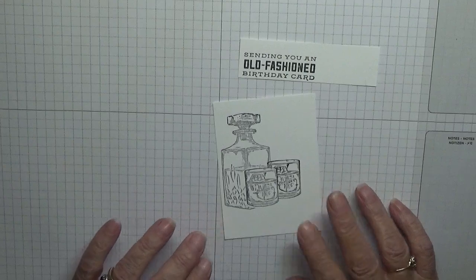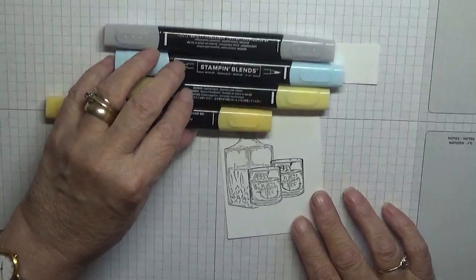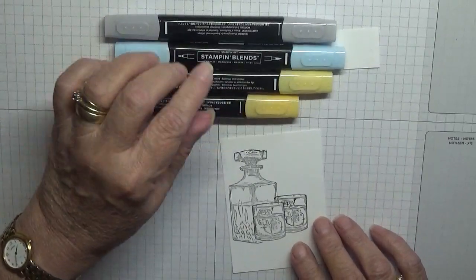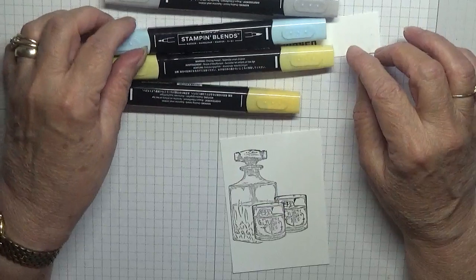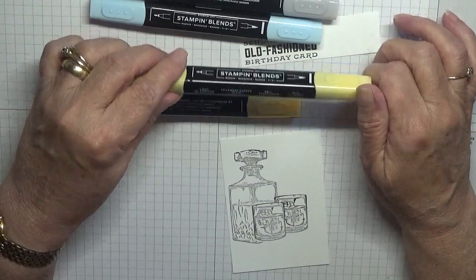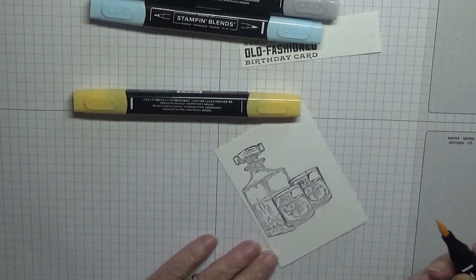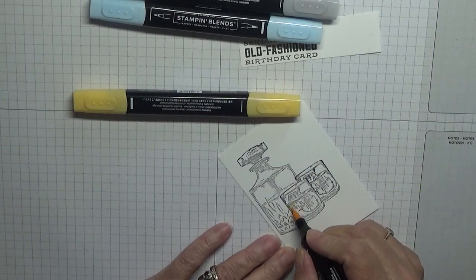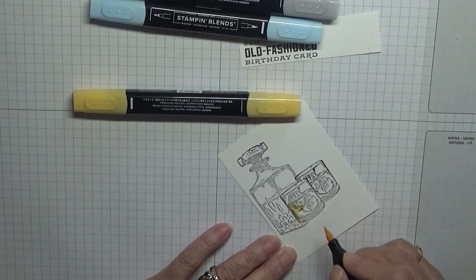What we're going to do is color these in. I have So Saffron light and dark, Balmy Blue light, and light Smoky Slate. So we'll do the whiskey first. All we do is color in all the liquids or where the liquid is going to be.